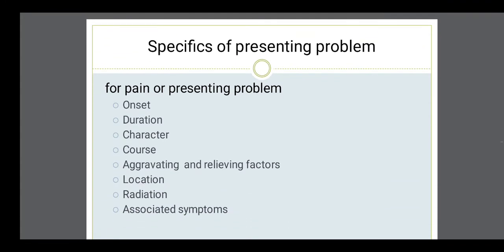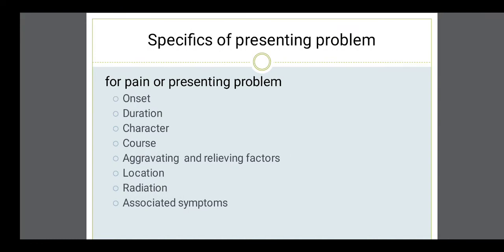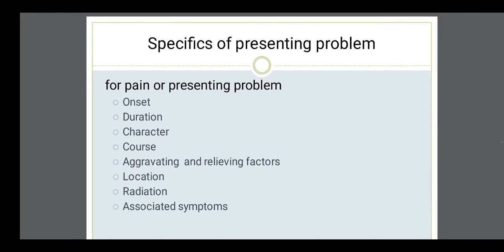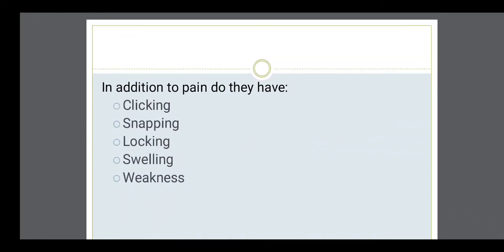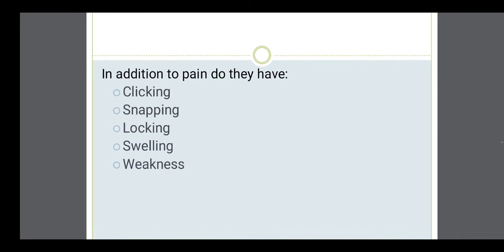When a patient reports pain, we have to ask about onset, duration, character of the pain, course of the pain, when the pain increases and decreases, location, whether the pain radiates to other parts, and associated symptoms. These are important questions when asking about pain in any organ. We also have to ask about related problems like clicking, snapping, locking, swelling, or weakness.